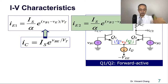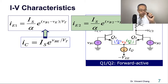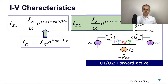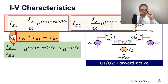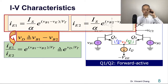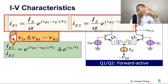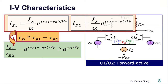By the same token, IE2 can be expressed the same way, with VBE replaced by VB2 minus the common emitter voltage. Now let's define the input differential voltage VD as the difference between VB1 and VB2. Taking the ratio of IE1 to IE2, IS and alpha cancel out, and the common emitter voltage cancels out, exposing the differential — so the ratio equals exponential of VD divided by VT.